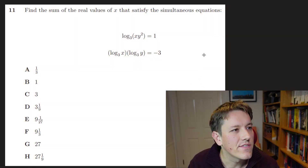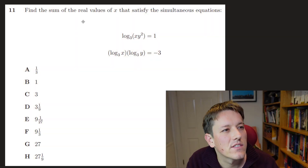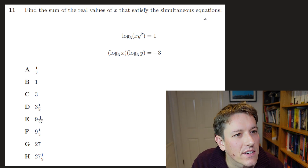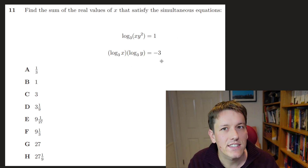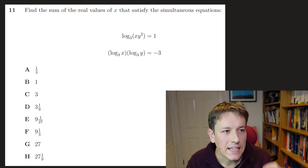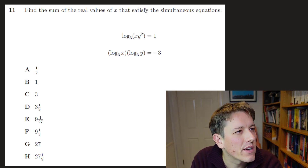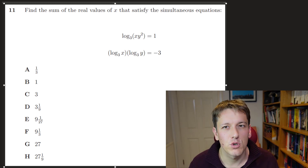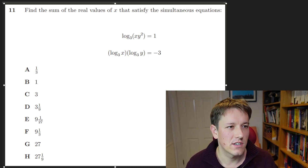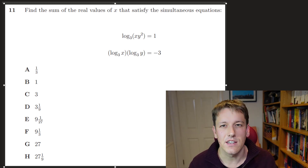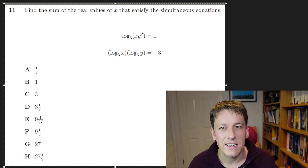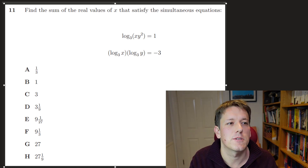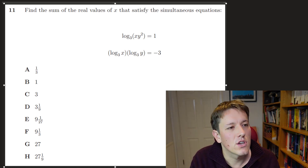In question 11 we want to find the sum of the real values of x that satisfy these simultaneous equations. Something that comes up in these TMUA papers a lot are disguised quadratics and disguised simultaneous equations, and that's what we're looking at here.